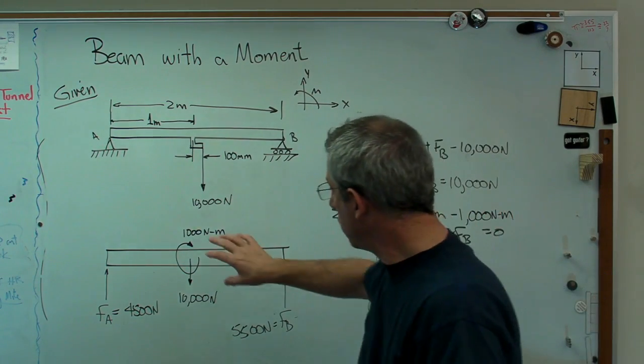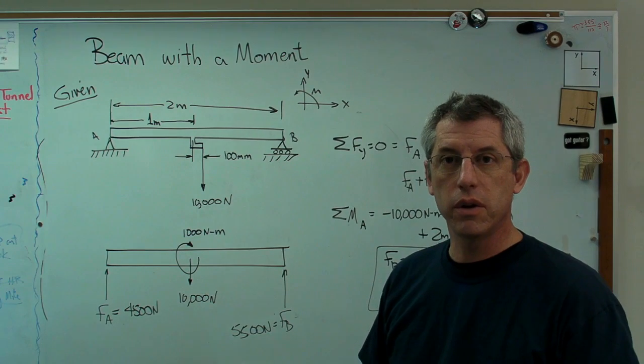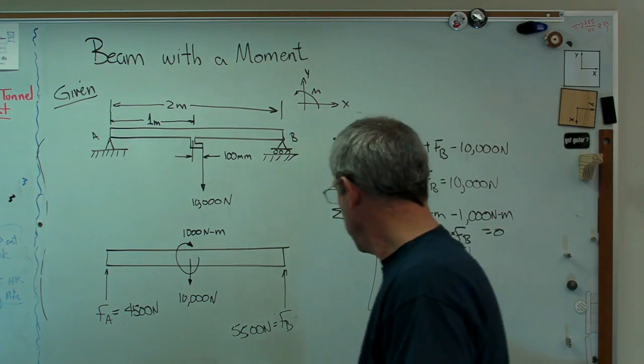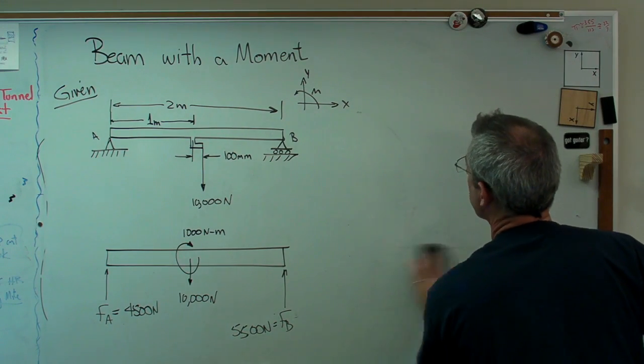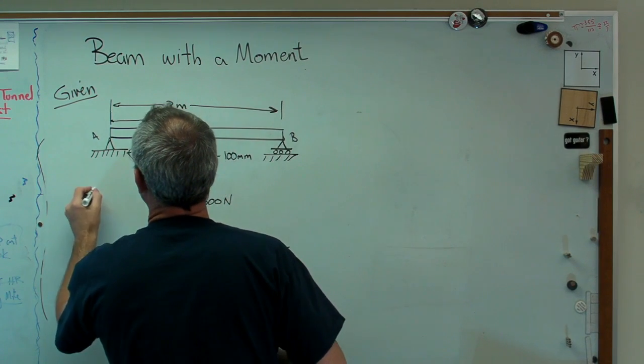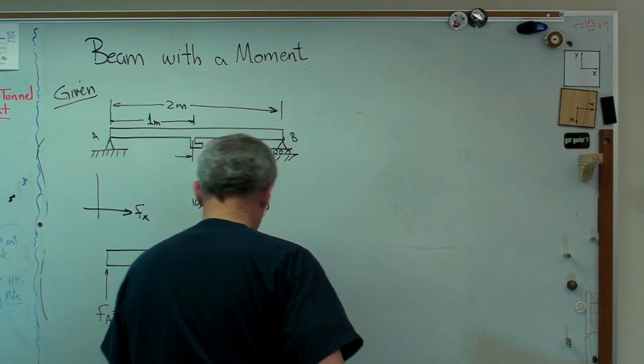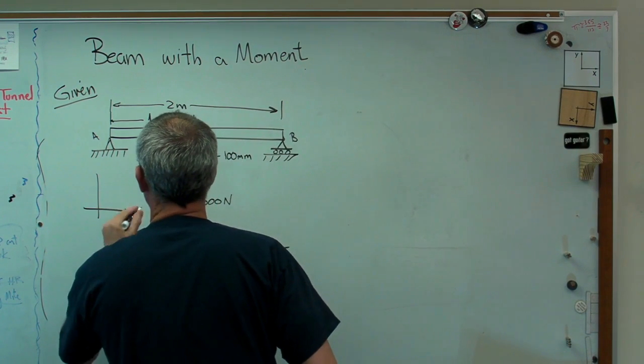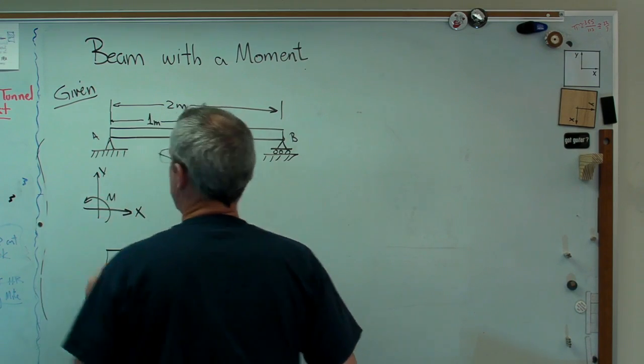The only complicated part of the load shear moment diagram is going to be that point moment right there. Because when we draw a load shear moment diagram, you actually wind up having to use two different coordinate systems. It's a little funny when you first see it. But when you see it work out a couple of times, it gets a little easier to deal with. So there we got it.